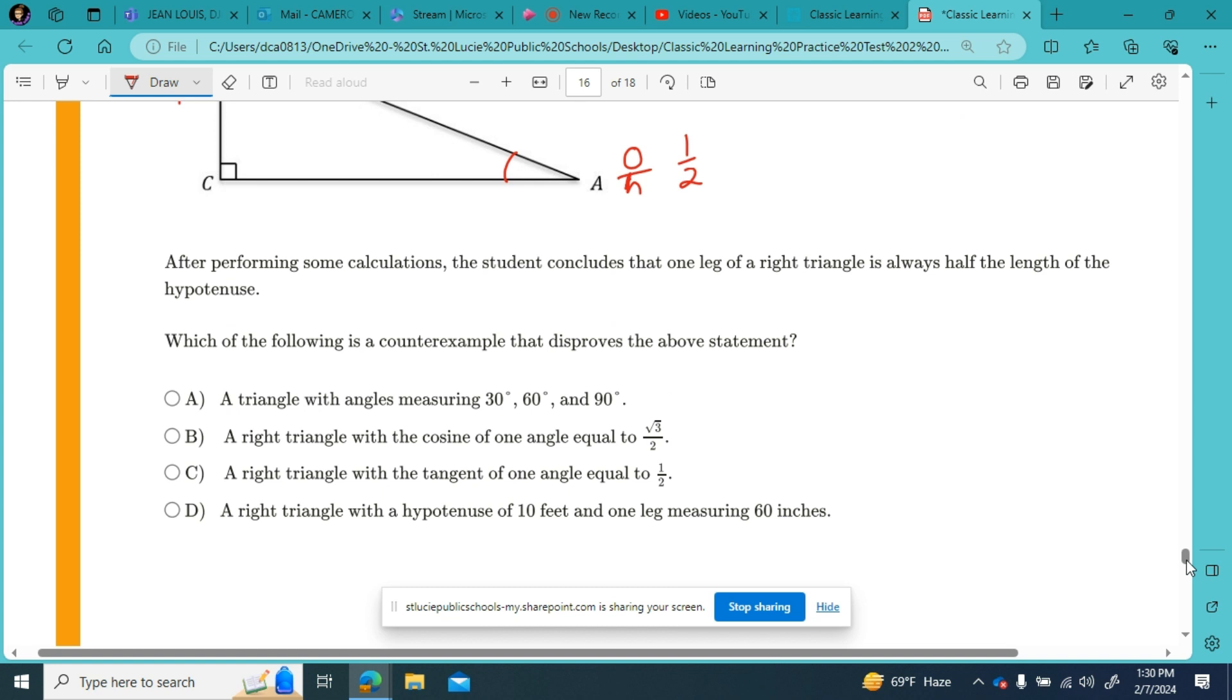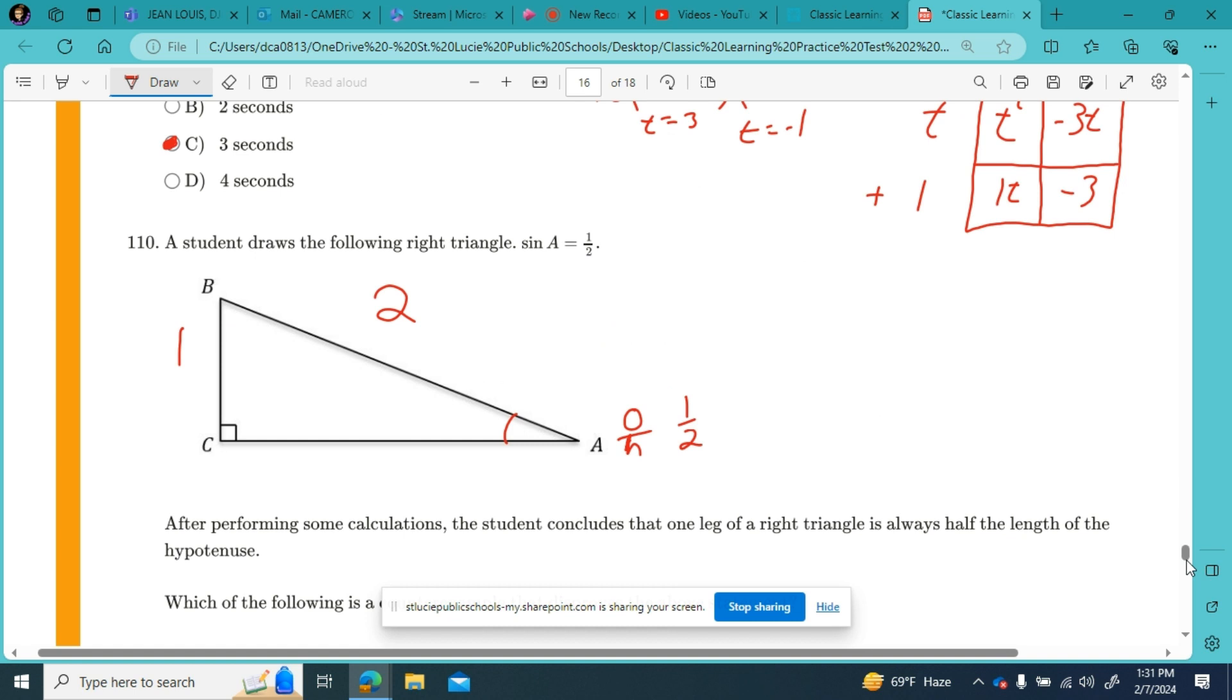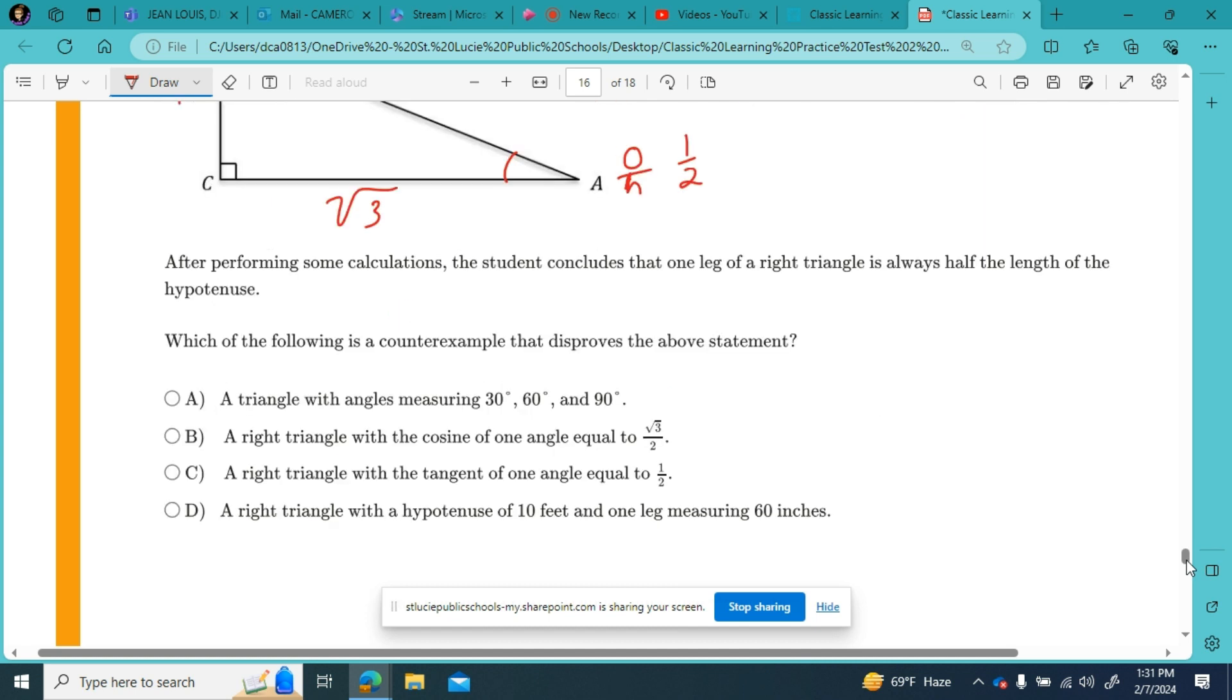After performing some calculations, the student concludes that one leg of a right triangle is always half the length of the hypotenuse. Which of the following is a counterexample that disproves the above statement? In a 30, 60, 90 degree triangle, they do give you at the bottom of your reference sheet that in a 30, 60, 90 triangle, the ratios are 1, square root of 3, 2. So that actually proves the statement. It does not disprove it.